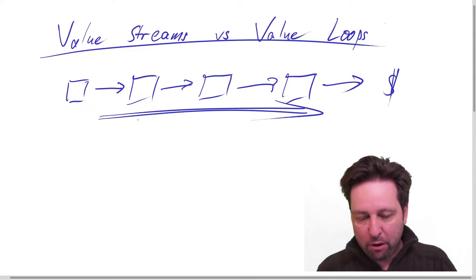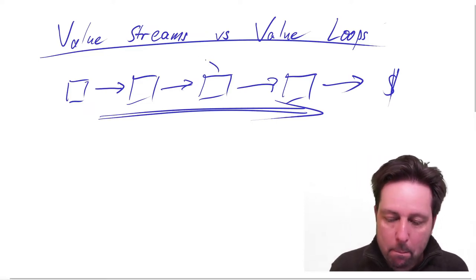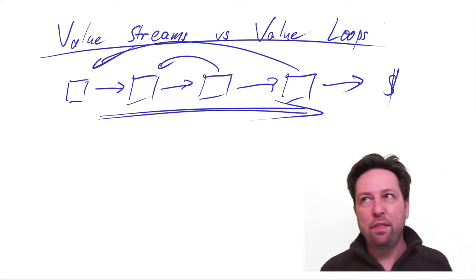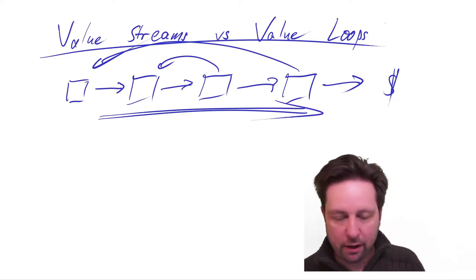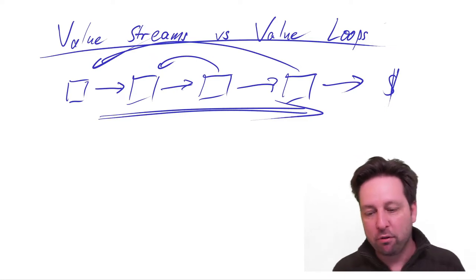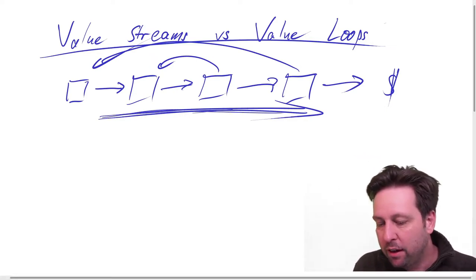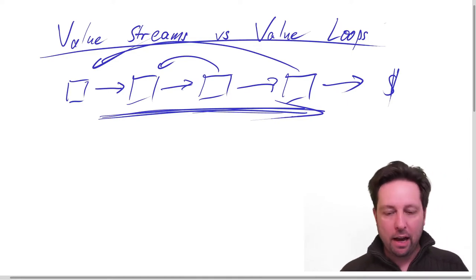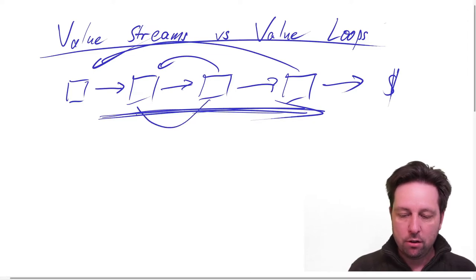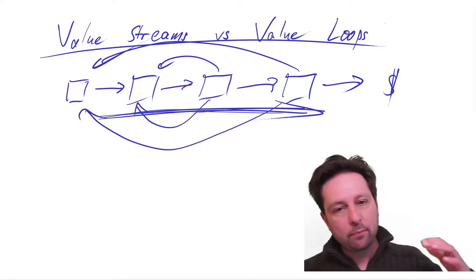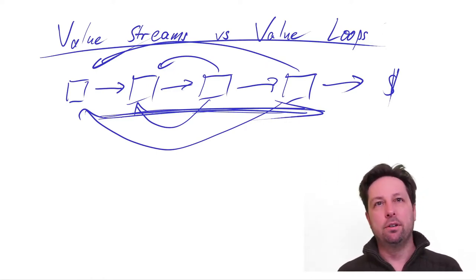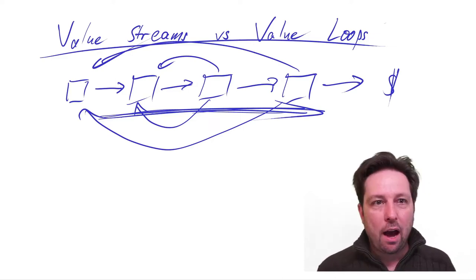There must also be feedback loops, and that is the one thing that really bothers me with almost every client that I talk to. Even if they are thinking in terms of value streams, they tend to think only in the downstream direction, and I wish that more people, more teams, more organizations would consider the upstream direction.